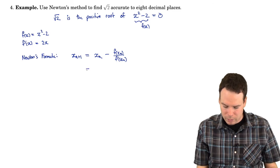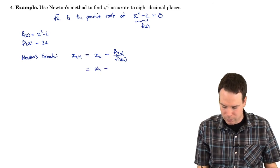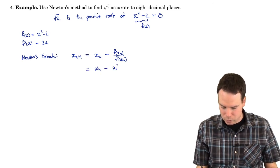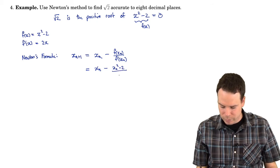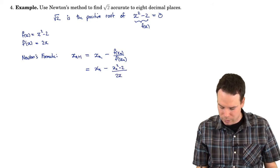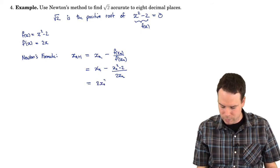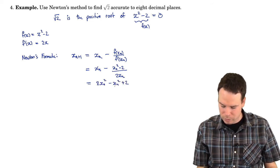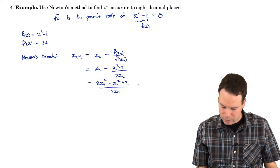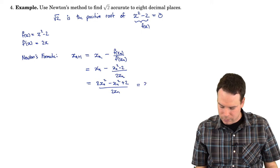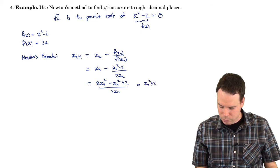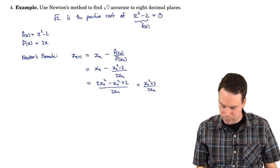And we can now say, okay, well, f of x_n is x_n squared minus 2. f prime of x_n is 2x_n. And I can do a little bit of simplification here, putting it over a common denominator.